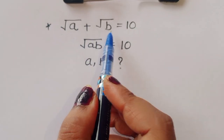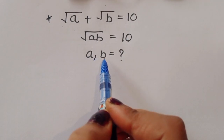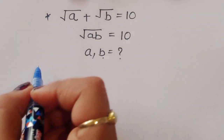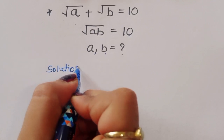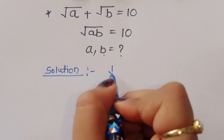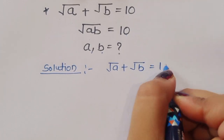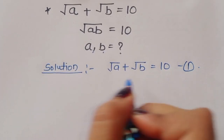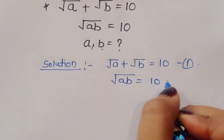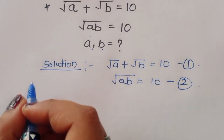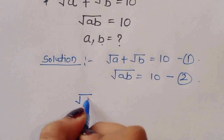Square root of a plus square root of b is equal to 10, and square root of ab is equal to 10. We have to find out the value of a and b. Let's see the solution. Square root of a plus square root of b equals 10 — this is equation number 1. And square root of ab equals 10 — this is equation number 2.